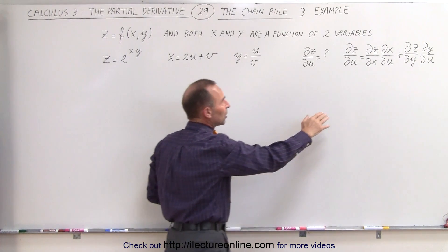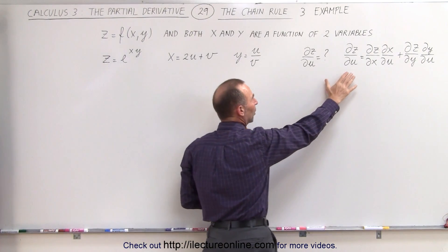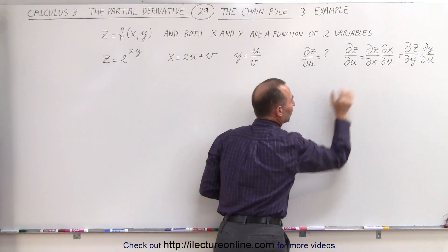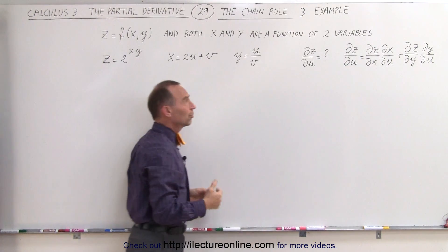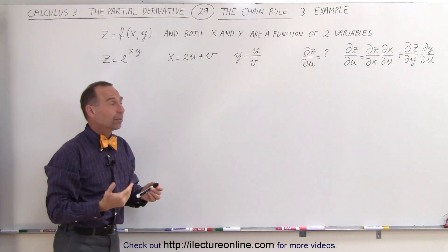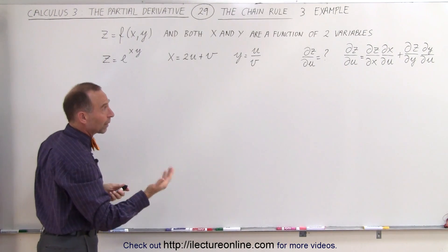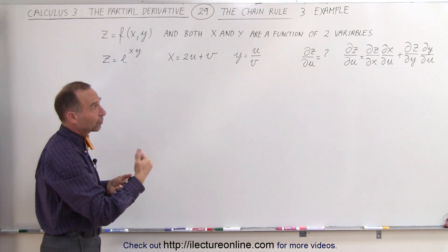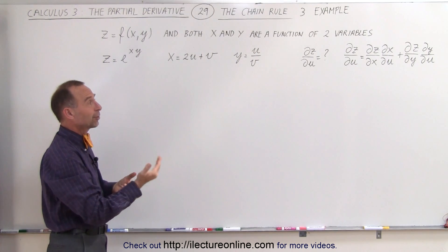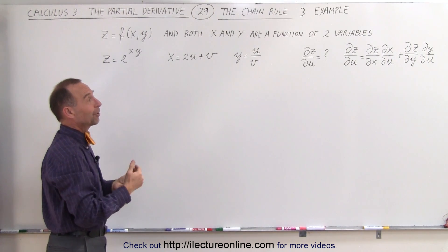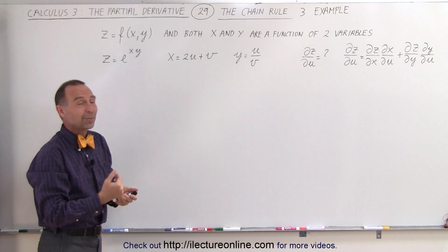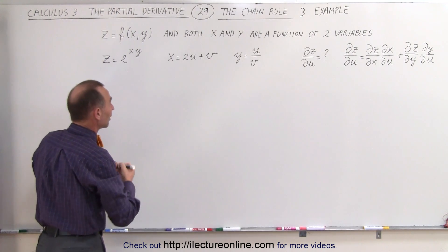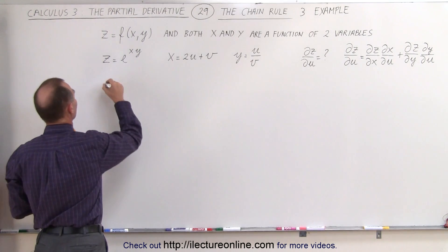The equation for the partial of z with respect to u is expressed right there, which means we need to find the partial of z with respect to x, the partial of z with respect to y, the partial of x with respect to u, and the partial of y with respect to u. Let's do that one at a time.